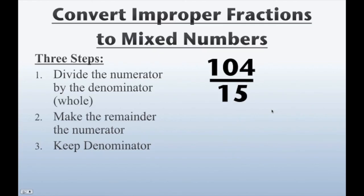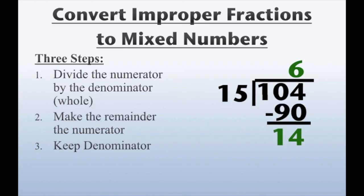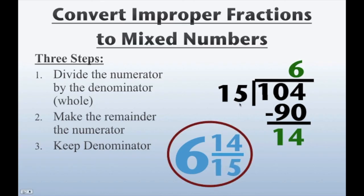And let's take 104 over 15. Same process — we're going to divide the numerator by the denominator. Bring 104 inside. 104 divided by 15 is going to give us 6. 6 times 15 is 90. And when we subtract, we'll get a remainder of 14. Now we have everything we need to create our mixed number. Division gave us our whole number — 6. Our remainder was 14, therefore that's going to be our numerator. And 15 is our divisor, therefore it's going to be our denominator. Our answer to 104 over 15 is equal to 6 and 14 fifteenths as a mixed number.